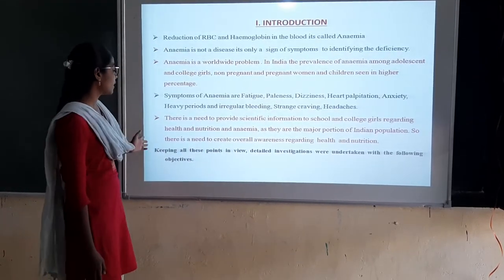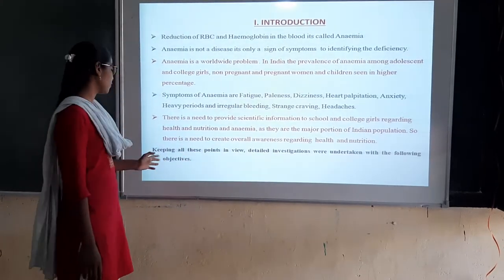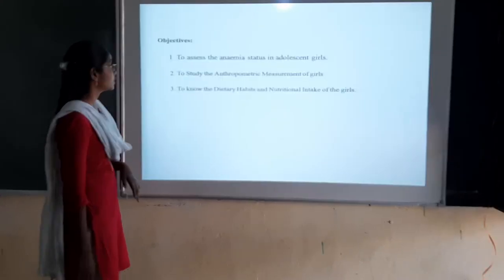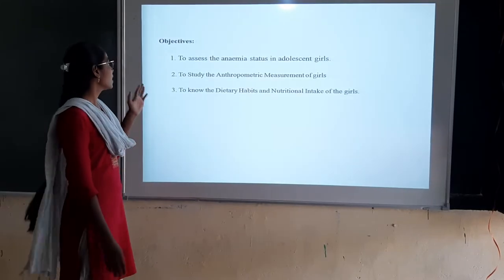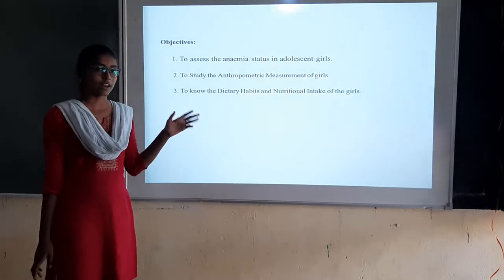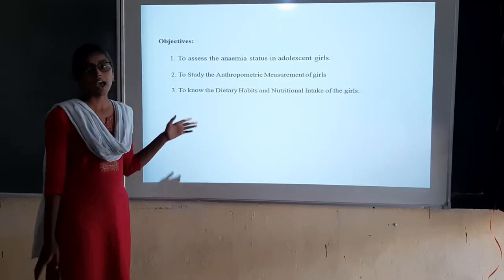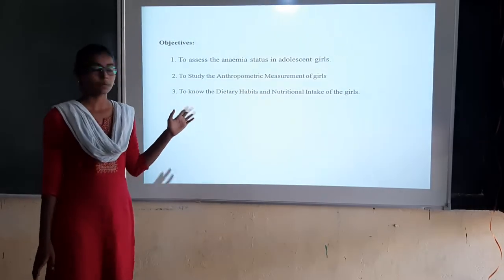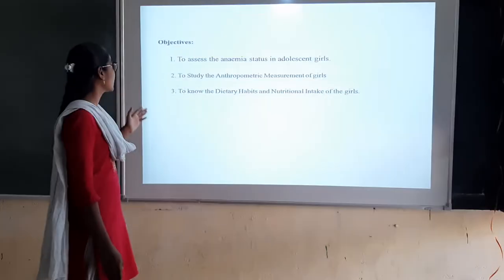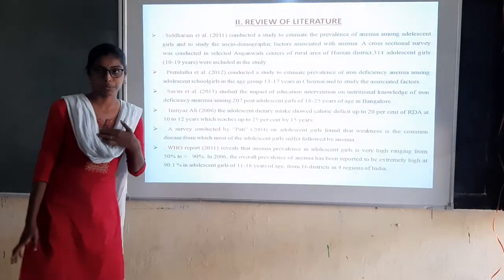Keeping all these points in view, detailed investigations were undertaken with the following objectives. The first objective is to assess the anemia status in adolescent girls. The second objective is to study the anthropometric measurements of girls. The third objective is to know the dietary habits and nutritional intake of girls.